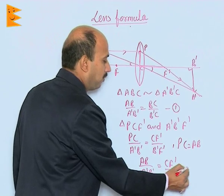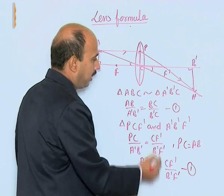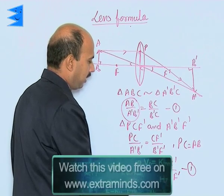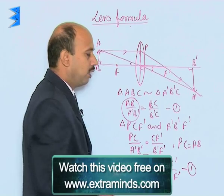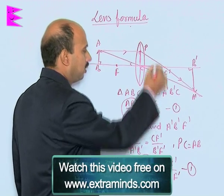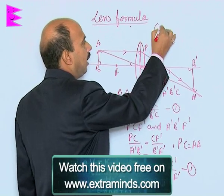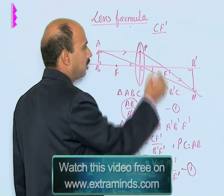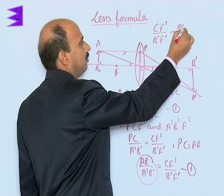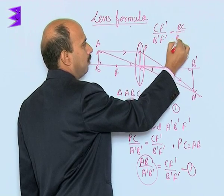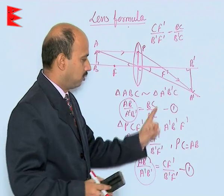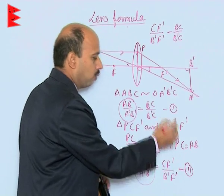From the first and second equations, these two left-hand sides are equal, so the right-hand sides are also equal. From equations 1 and 2, we can write: CF' / B'F' = BC / B'C.